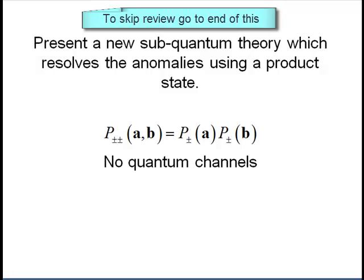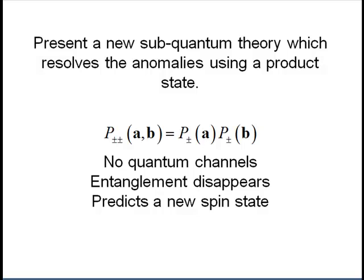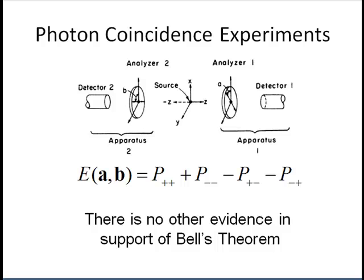A significant result of the subquantum theory is that it agrees with the experimental results as a product state with no quantum channels, no entanglement. It predicts a new quantum state for spin that cannot be predicted from quantum mechanics, and which is supported by the experimental agreement. Not only does it agree with quantum mechanics, but it is also consistent with the anomalies found. The photon-coincidence experiments are the only ones upon which the validity of Bell's theorem rests.